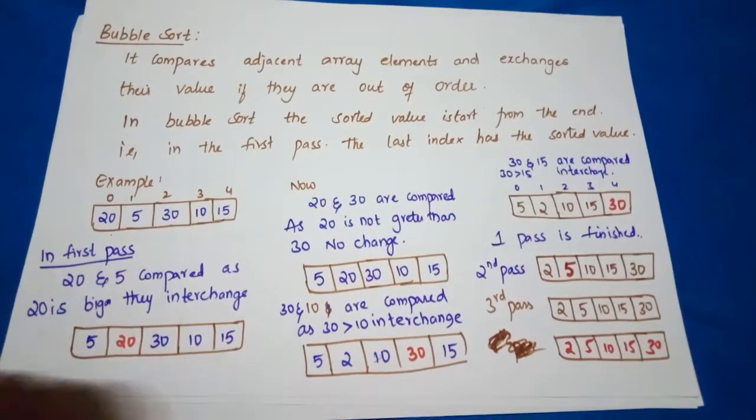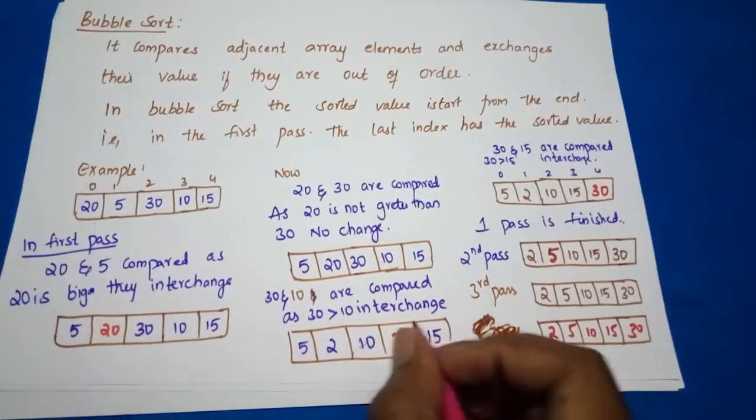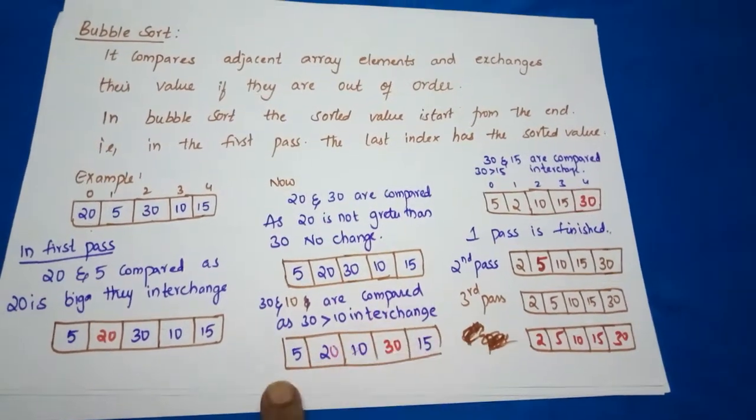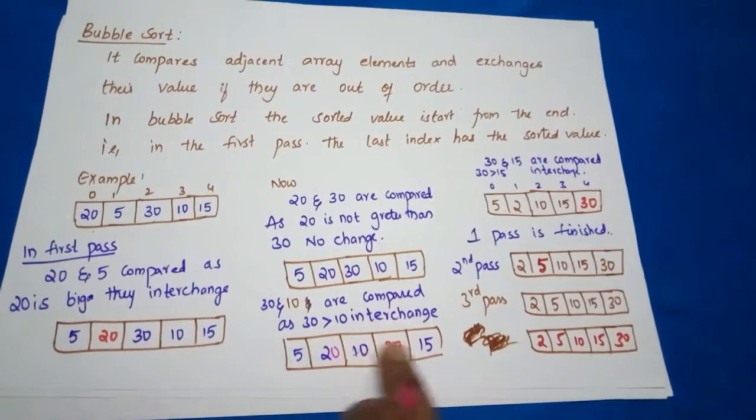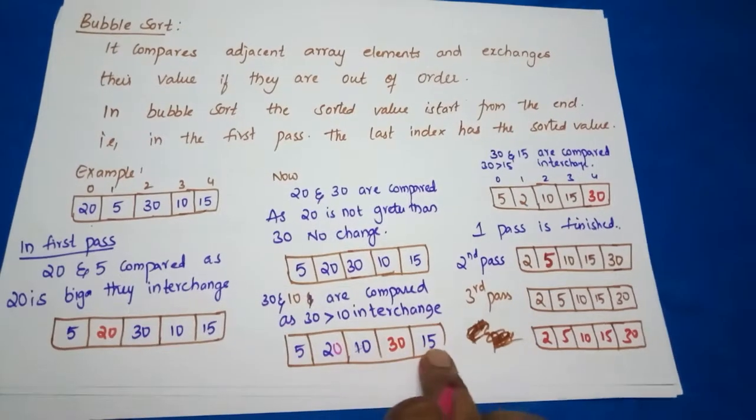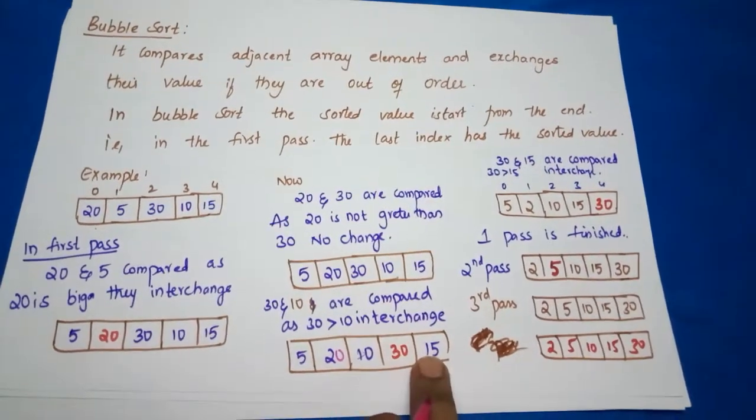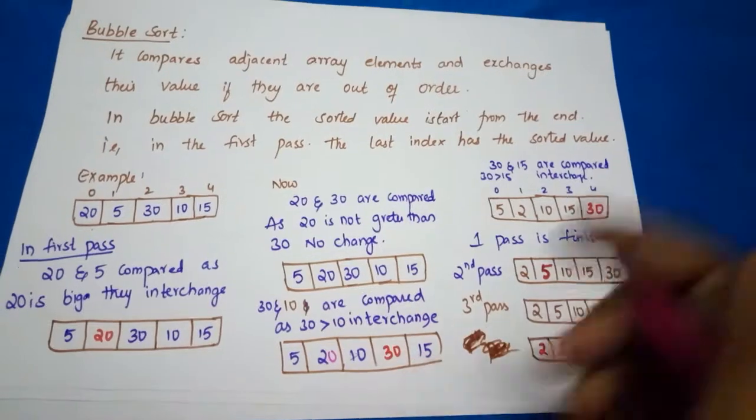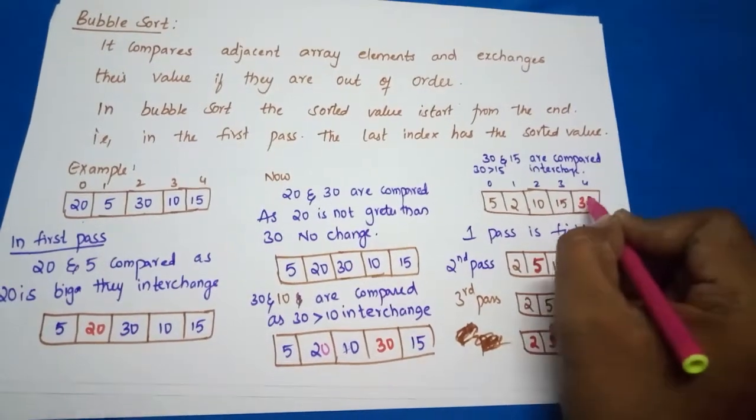30 is greater than 10, true or false? Yes, it is true. So when it is true, this will be changed to 5, 20, 10, 30 - these are interchanged. And again, 30 and 15, we'll check - is 30 greater than 15, true or false? Yes, it is true, so 15 and 30 are swapped.